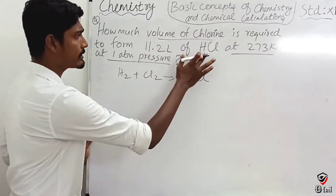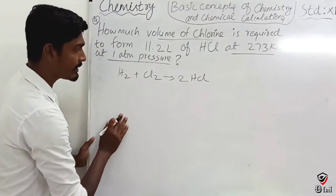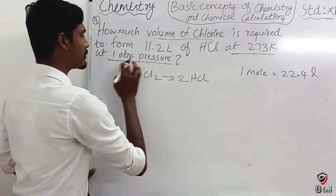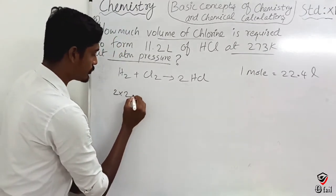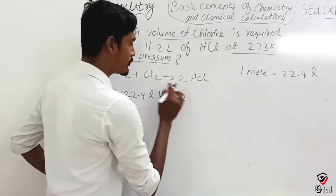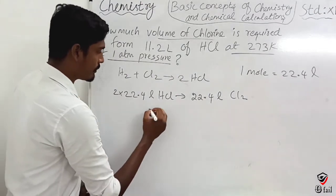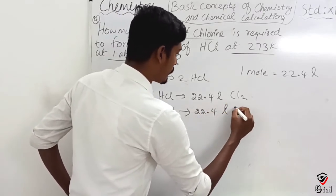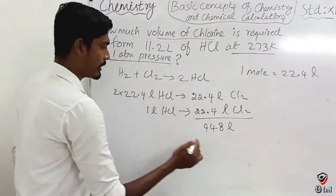First observation: to form 1 mole of HCl we need to consider 22.4 liters of HCl. So we have to solve for 1 mole of Cl₂. Now the question — what if we have to solve for 24.8 liters of HCl?